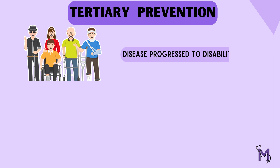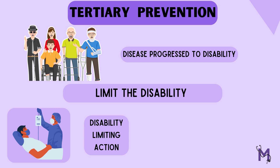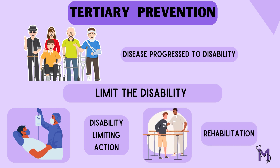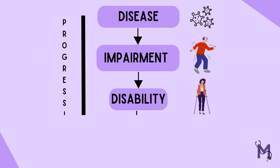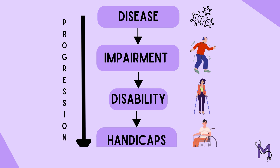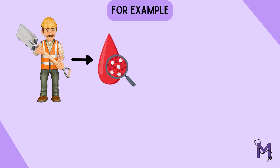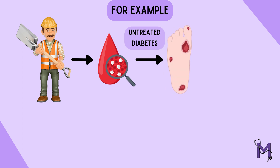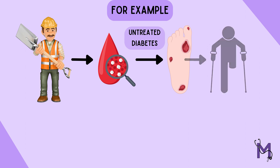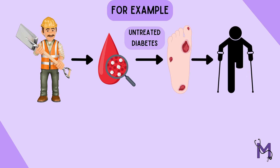Lastly, we have tertiary prevention, where preventive actions are taken in cases where the disease has progressed to a disability. It is necessary to take up disability-limiting actions along with rehabilitation. To understand how a disease leads to impairment, then disability, and then handicap — consider a construction worker diagnosed with untreated diabetes. This disease ultimately led to a diabetic foot, an impairment. For correction, he must undergo amputation of the lower part of his leg, leading to a disability.